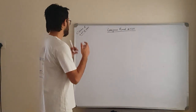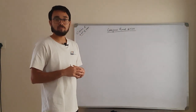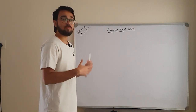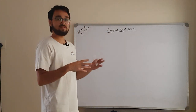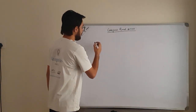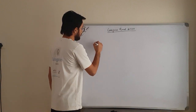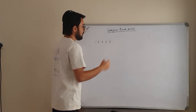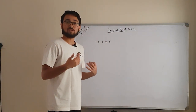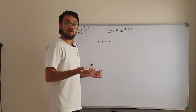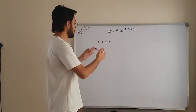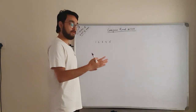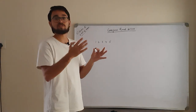Hello everyone, today we will be discussing problem C from Codeforces round 539. For the detailed problem statement, follow the link in the description. The problem gives you an array — say an array of size 5 with elements 1, 2, 3, 4, and 5 — and asks you to find the number of segments or sub-arrays which have the XOR sum of the left half equal to the XOR sum of the right half.